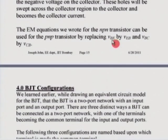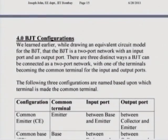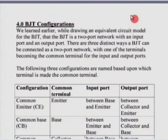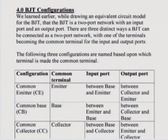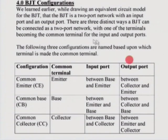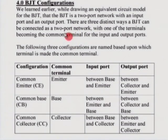Since we have seen BJT in fairly great detail, let us look at the BJT configurations. These configurations are quite important when we talk about amplifiers. Why do we have different BJT configurations? We said earlier that a BJT can be thought of as a two-port network, and since there are three terminals, you can have one terminal as the common terminal for both the input and the output ports. So there are three possibilities.